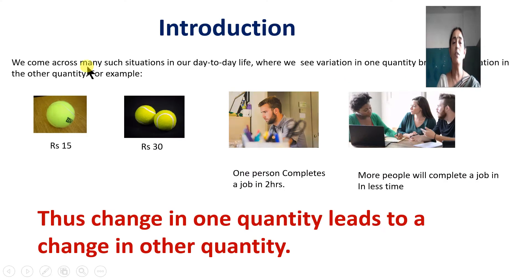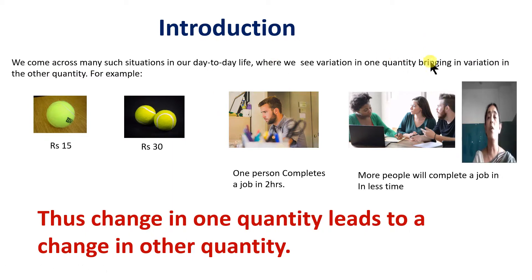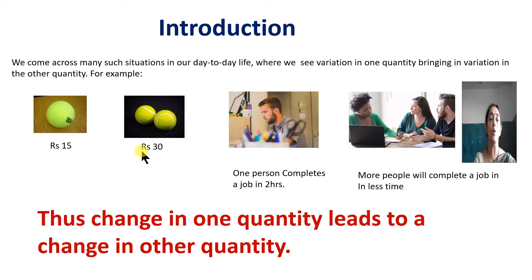We come across many situations in our day-to-day life where variation in one quantity brings variation in another quantity. For example, the cost of one ball is rupees 50. When there is a variation in the number of balls — it becomes two balls — there will be variation in price also. So variation in one quantity, the number of balls, from one ball to two balls, means the cost price of two balls becomes rupees 100.